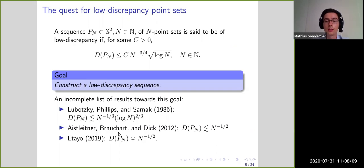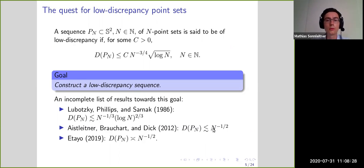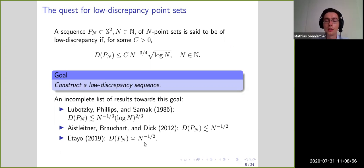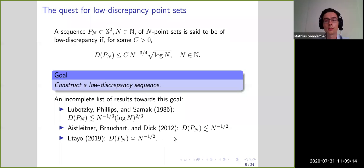A result by Aistleitner, Brauchart and Dick achieved, using a mapping construction, spherical cap discrepancy of rate n to the minus 1/2. This is already closer but still equals the rate of random points — random points have expected discrepancy of n to the minus 1/2. These point sets behave numerically optimal, so it would be nice to prove this optimality.